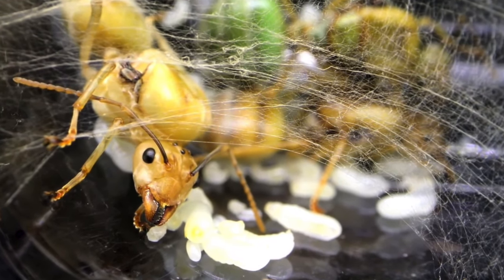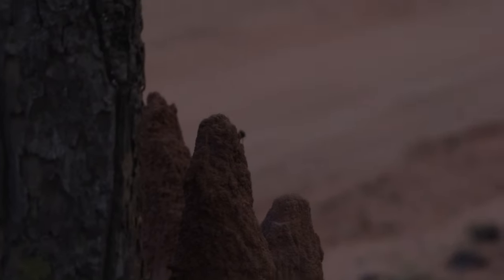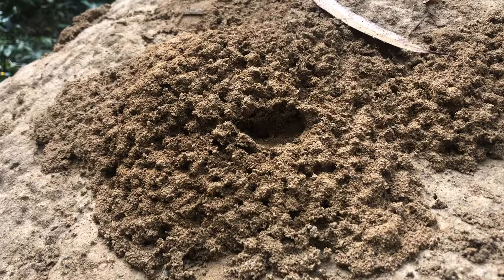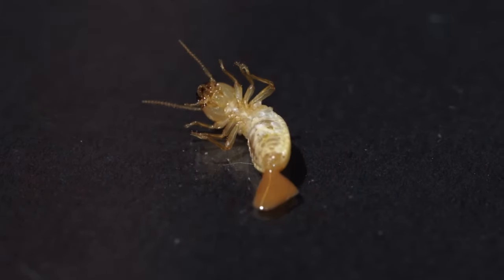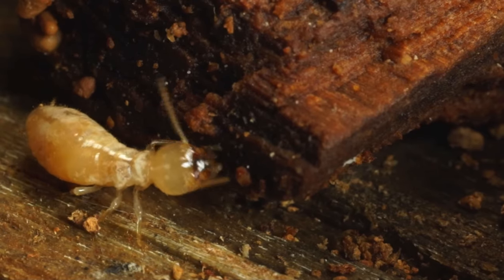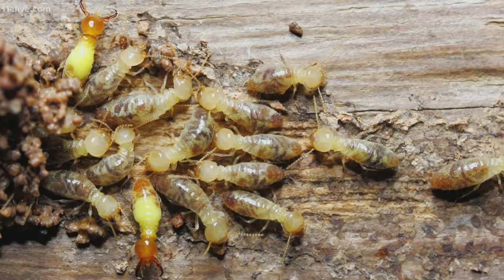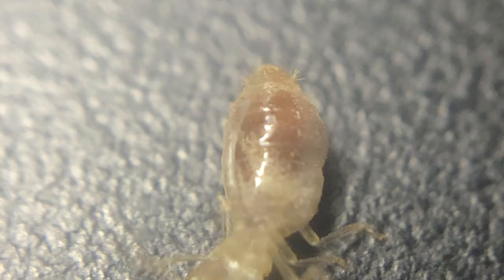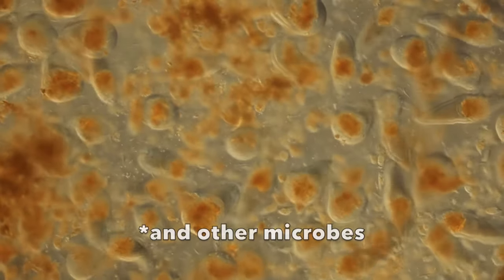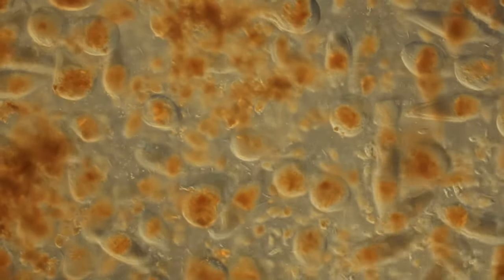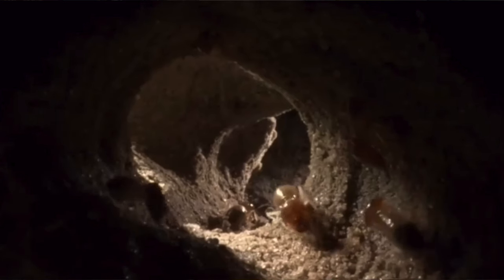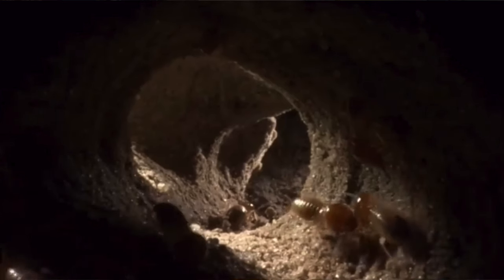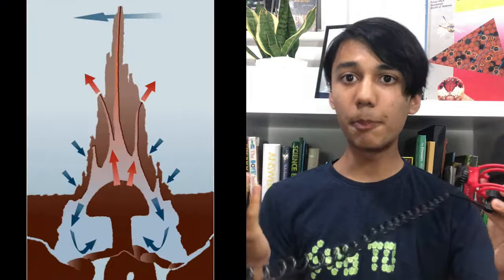A termite nest is actually made of their poop. Workers chew up detritivorous matter such as wood, cotton, and leaves. The cellulose is then digested by special bacteria in their abdomens — a process not yet fully understood by scientists. The nest itself is beneath the mound, several feet below the surface of the ground.